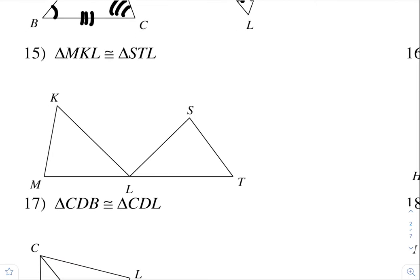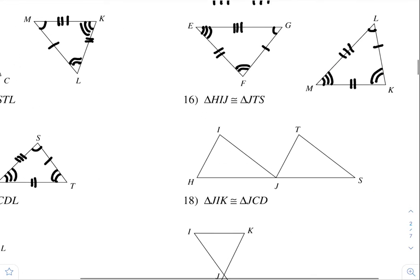M is congruent to S. K is congruent to T. Angle L is congruent to angle L — so both of those angles are congruent to each other. For the sides: MK is congruent to ST, KL is congruent to TL, and LM is congruent to LS. And there's your triangles marked up.